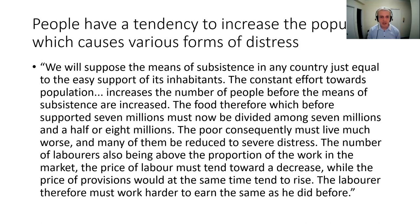The laborers being above the proportion of work in the market means the price of labor tends to decrease while the price of provisions rises. There's less work so labor becomes cheaper; there's more competition for food so food becomes more expensive. The laborer must work harder to earn the same as before. The big problem is there's a physical limit to how hard people can work — once we hit that, people wear out, get malnourished, and die.